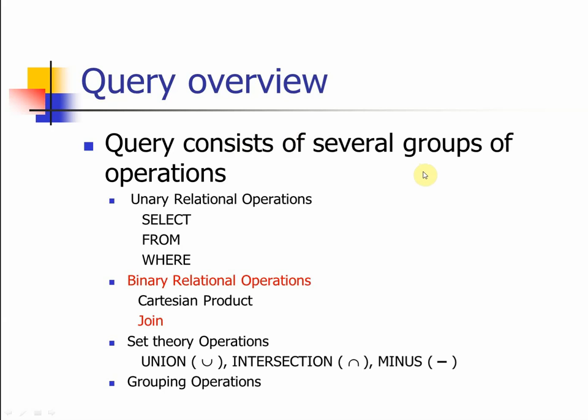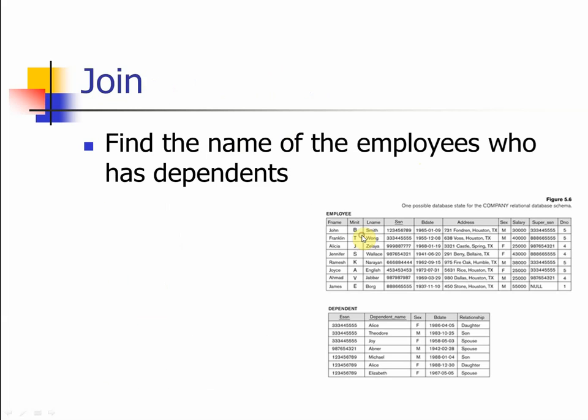Since we understand the Cartesian product and its connection to the join, it is time to see how we use join operations to get information that lies in multiple tables. So let's take a look at this example.